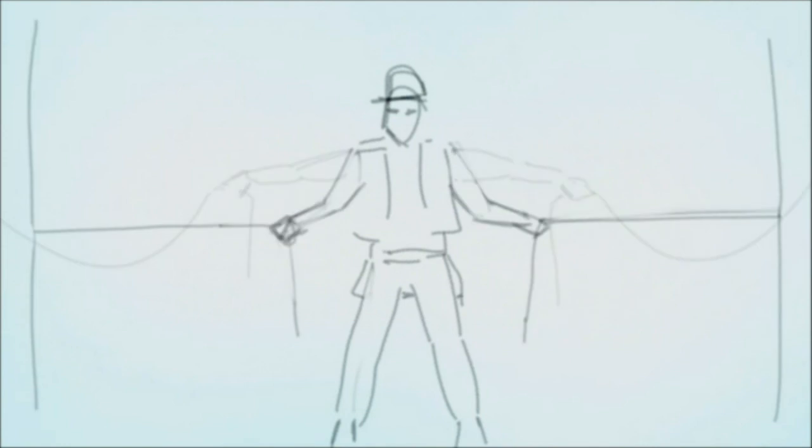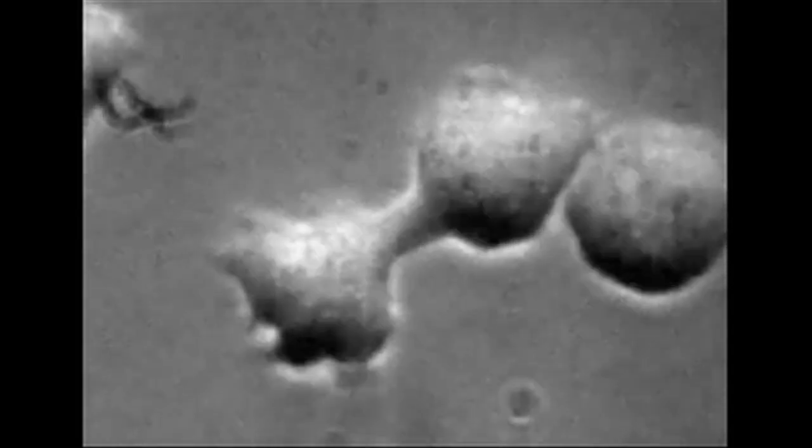In much the same way, myosin-2 uses energy to do the work of pinching the cell's skin together to divide the cell as it's doing in the Dictyostelium cell.